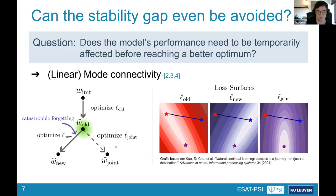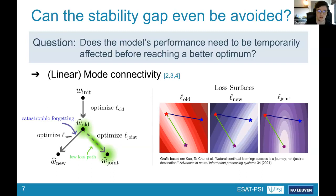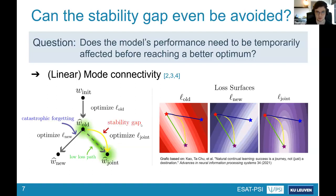However, if we train jointly on all the data, linear mode connectivity tells us there would have been a path such that we arrive at the joint optimum without leaving the low-loss region for the old task — and since the joint optimum is also near-optimal for new data, we don't need to forget. Yet apparently we are not taking this path, because what we experience is the stability gap.